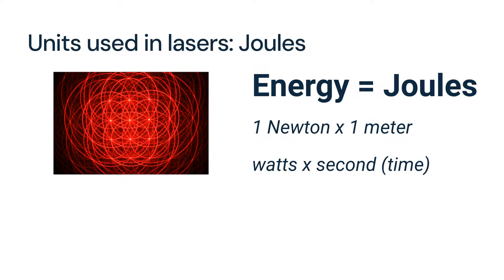The second unit used in lasers is the joule, which tells us how fast and far the energy is produced. In the context of lasers, the joule is often used to express the energy content of laser pulses. A laser pulse with energy measured in joules can have various effects depending on its power level, duration, and wavelength, affecting its applications in material processing, medical treatments, and other fields.